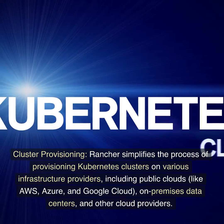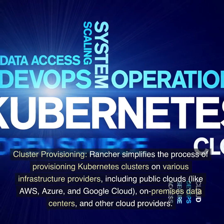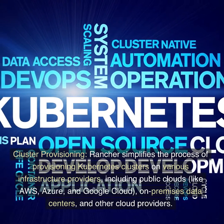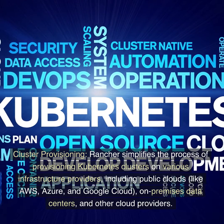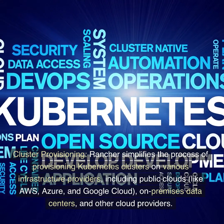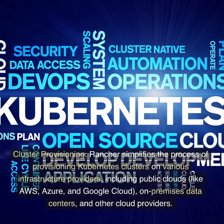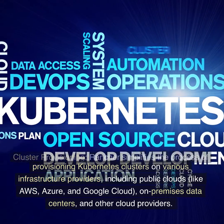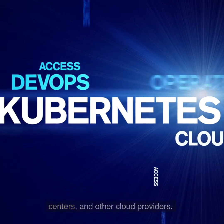Cluster provisioning: Rancher simplifies the process of provisioning Kubernetes clusters on various infrastructure providers, including public clouds like AWS, Azure, and Google Cloud, on-premises data centers, and other cloud providers.